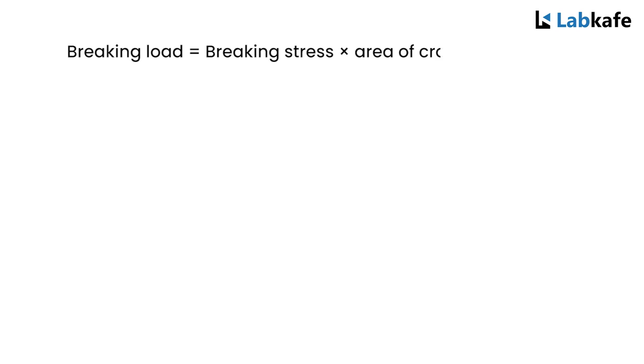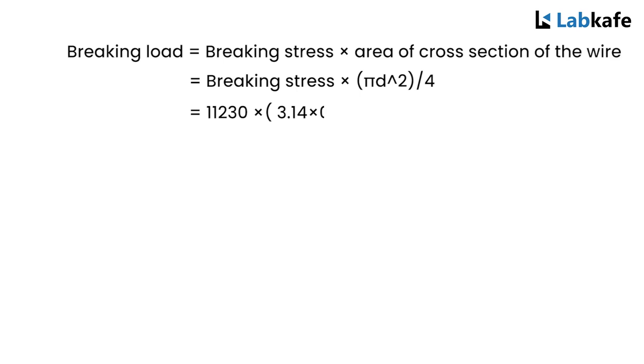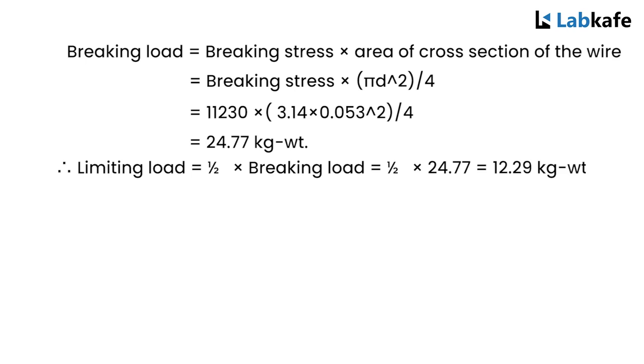Breaking load is breaking stress into area of the cross section of the wire equals breaking stress into pi d squared by 4 equals 11,230 into 3.14 into 0.053 squared by 4, which equals 24.77 kilogram weight. Now, the limiting weight is half of the breaking load equals 12.29 kilogram weight, which means the maximum load capacity of the wire is 12.29 kg weight within the elastic limit.